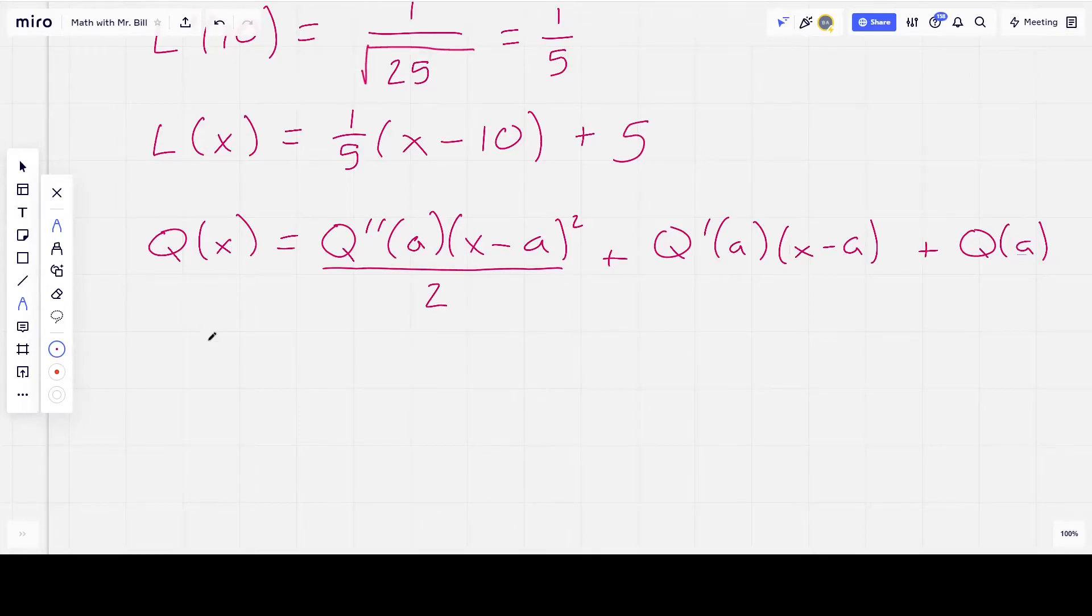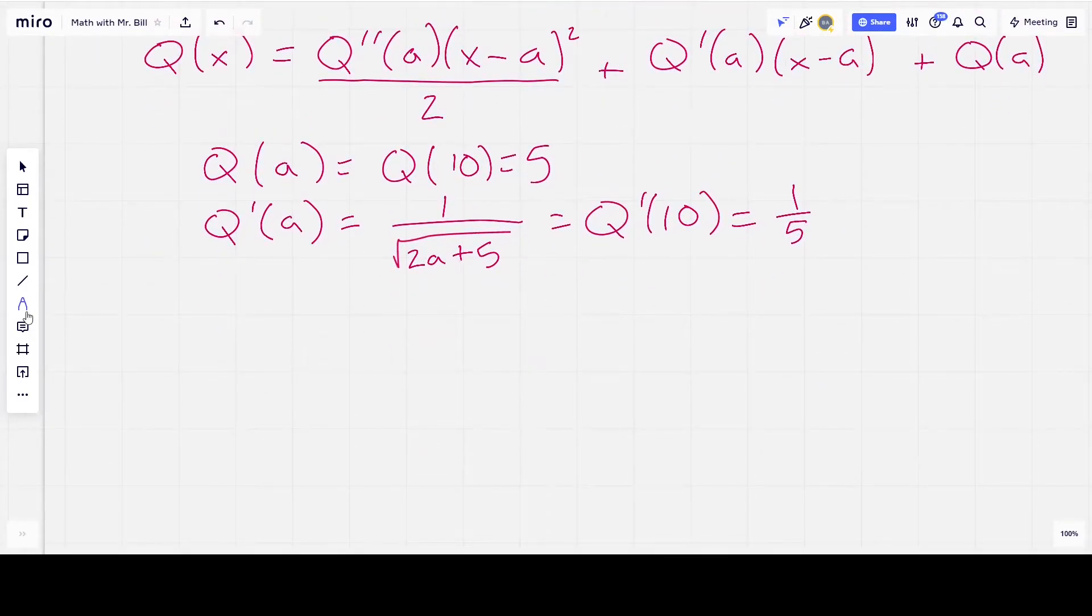Let's find all of our pieces. So, we know that Q(a), which is Q(10), that is 5. We know Q prime of a, because we did that earlier, that was going to be 1 over the square root of 2a plus 5. And then, when we plugged in 10 into that, we got 1/5. And so, our last piece that we need to find is Q double prime.